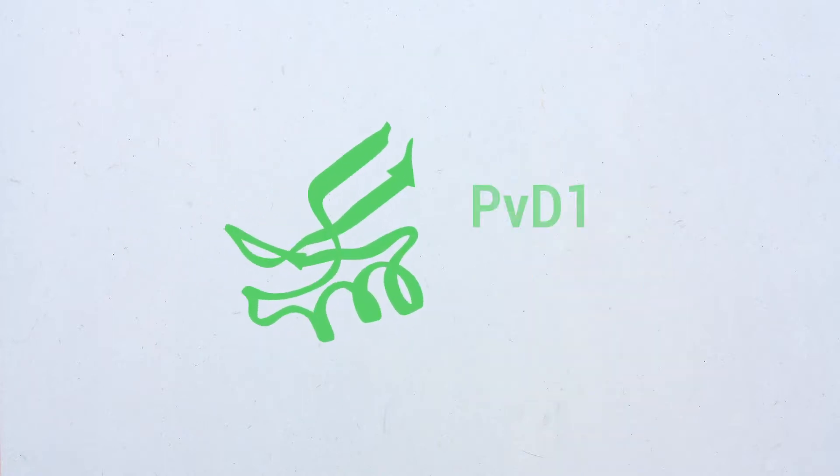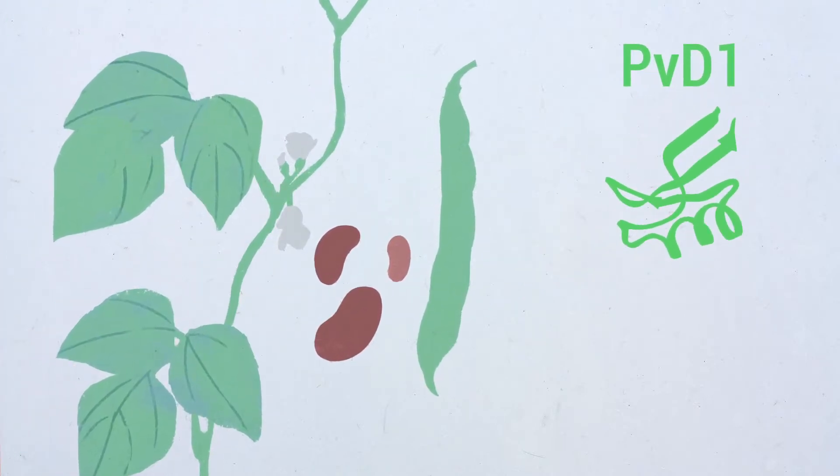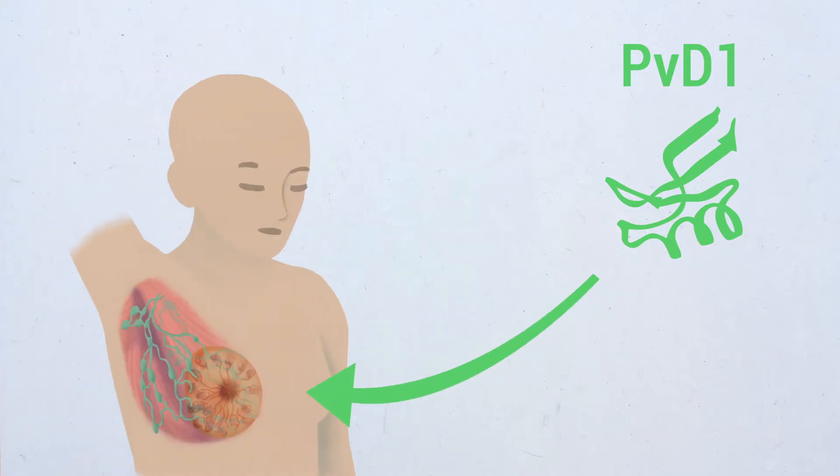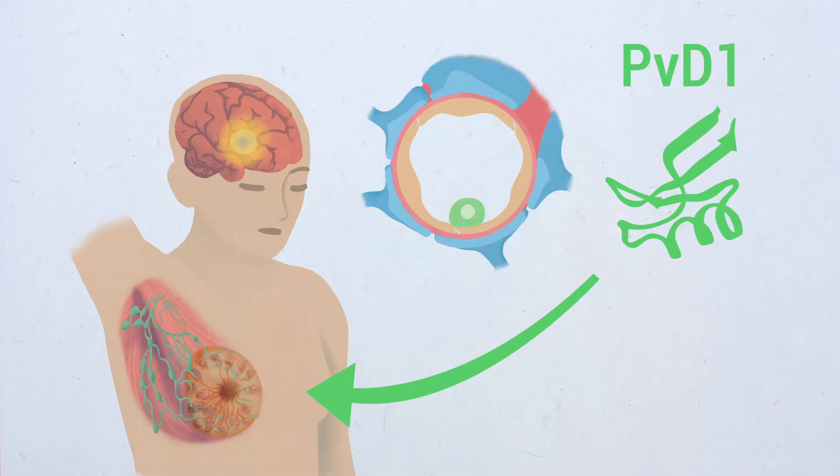In this work, we reveal the anti-tumor activity of PVD1 peptide, a natural antimicrobial plant defensin from Phaseolus vulgaris, the common bean, on human breast cancer cells and its ability in aiding the prevention of brain metastasis formation by affecting cellular adhesion to brain arteries.